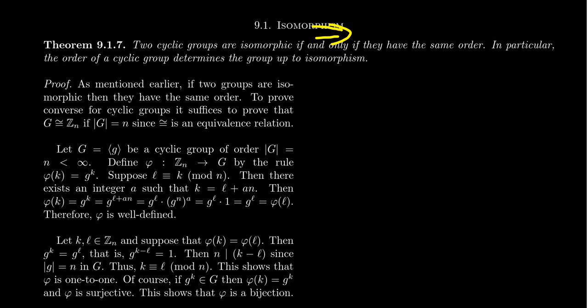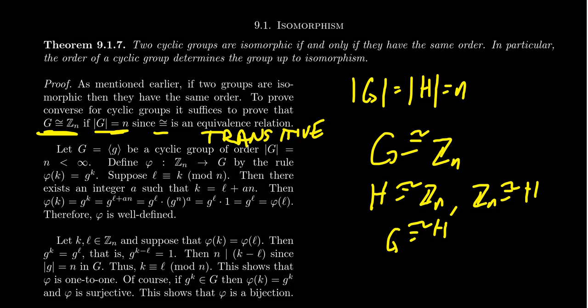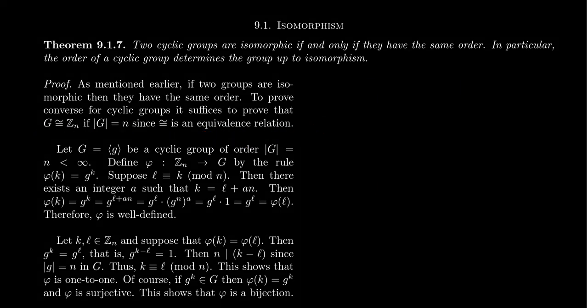So in order to prove the converse, we want to prove now the other direction. Suppose we have two cyclic groups with the same order. We want to prove that these cyclic groups are actually isomorphic. Now, since isomorphism is an equivalence relationship, it actually is transitive. So it suffices that if a cyclic group has order N, that it's isomorphic to Z_N. Because if we can prove, let's say we have two cyclic groups, both H and G, whose orders are N. Well, if we can prove that G is isomorphic to Z_N, and we can prove that H is isomorphic to Z_N, then by symmetry and transitivity, we get that G is isomorphic to H.